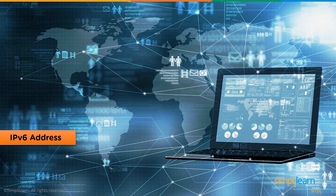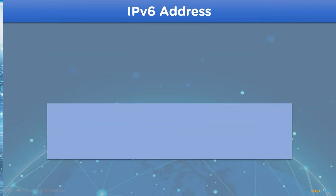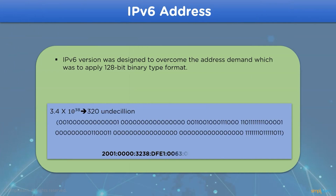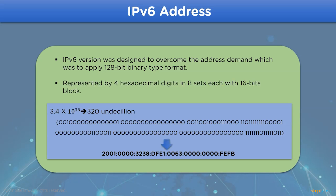Then we have IPv6 addresses. With the increase in the need for IP addresses, IPv4 version addresses are somewhat unable to complete the requirements of the network host. So the need for IPv6 version arose, which is based on a 128-bit address size — sufficient for a very long time — that is approximately 320 undecillion IP addresses. This type of IPv6 address is designed with 4 hexadecimal digits and 8 sets, with each block containing 16 bits separated by a colon.